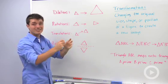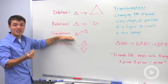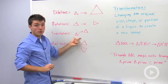So you're not going to change its size or its shape. The next type is a translation or sliding it. Basically you're going to have a figure and you're going to slide it in some direction.